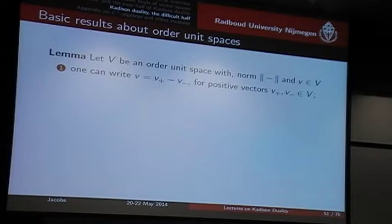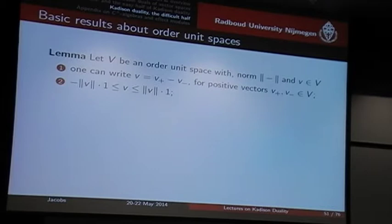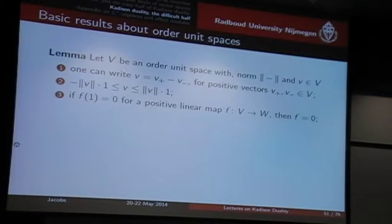Each element can be split into a difference of two positive elements — recall we have an order here — and the splitting is by no way unique. There's a norm that you can define, and it's fairly well-behaved: the vector is squeezed in between the norm multiplied by the unit. These are properties that you also find in C*-algebras, whereas it's nice that you can prove them already for these weaker structures. If a positive linear map — not necessarily unital — is zero on the unit, then it must be zero everywhere. It's a useful property.